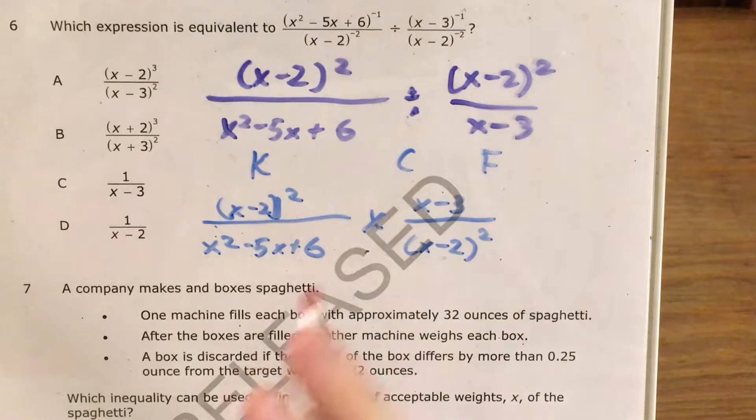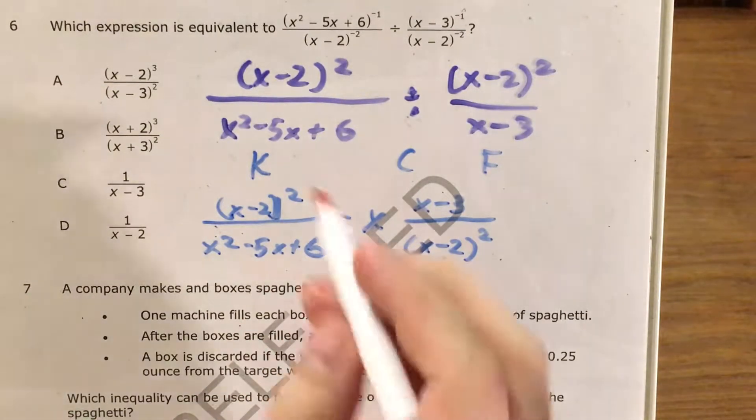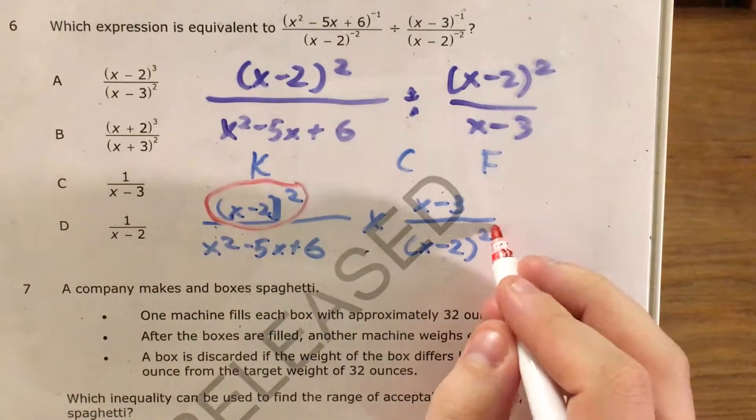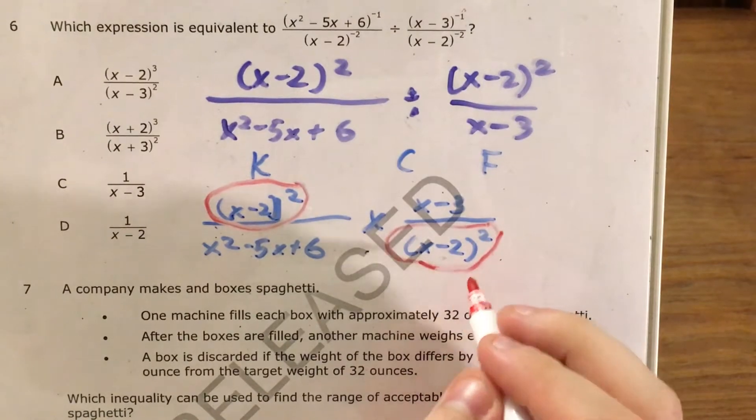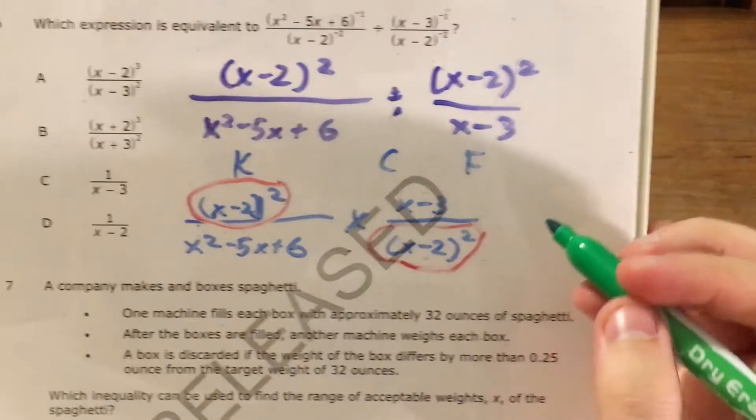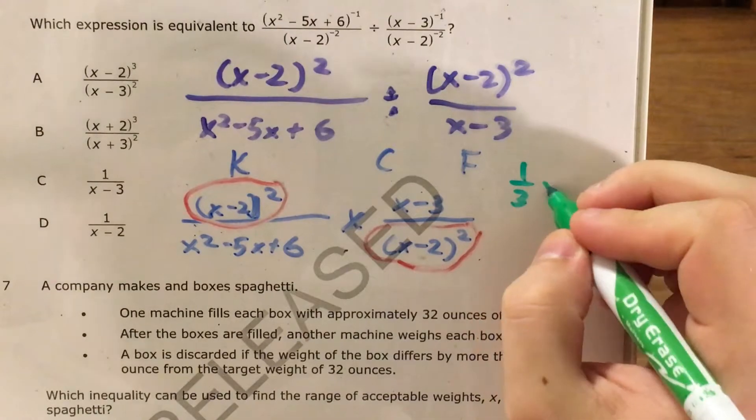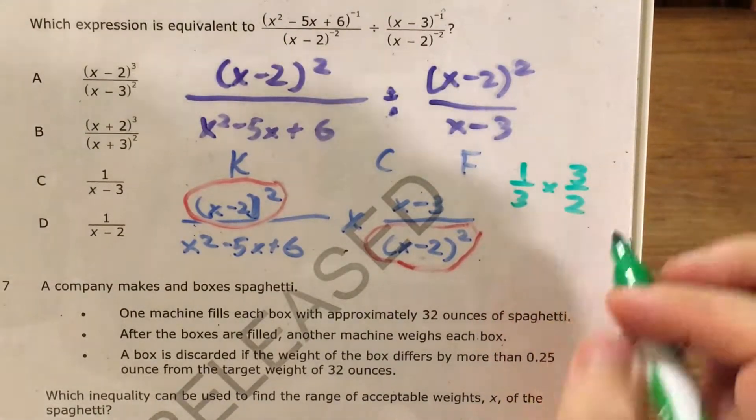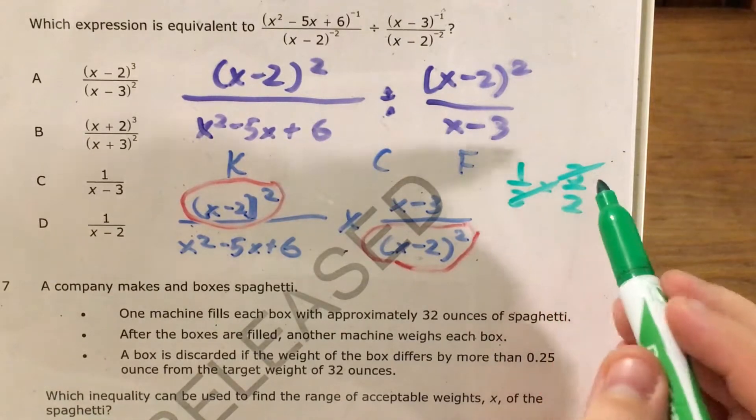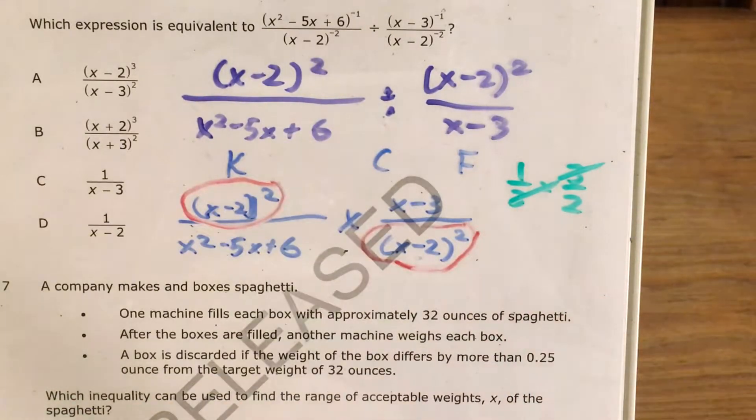And now before I multiply across my numerators and denominators, I'm going to notice that x minus 2 squared appears in both my numerator and my denominator, and this is no different from if I saw, for instance, let me use green for this, 1 third times 3 halves. I could cross out this 3 because it appears somewhere in the bottom and somewhere in the top, and it would be a lot easier to do this now. It would just be 1 half.